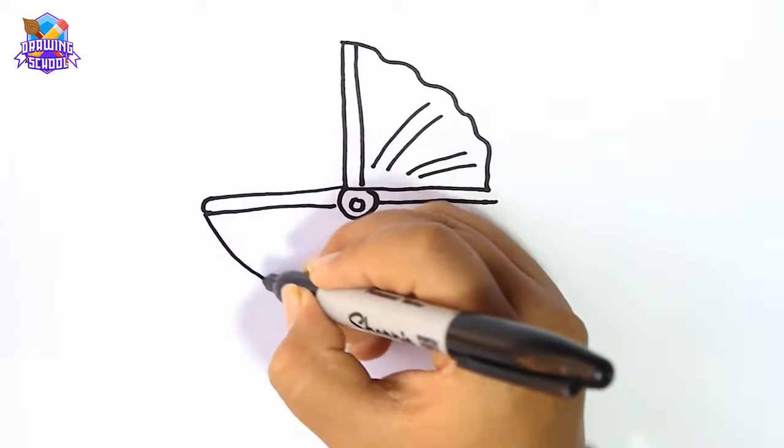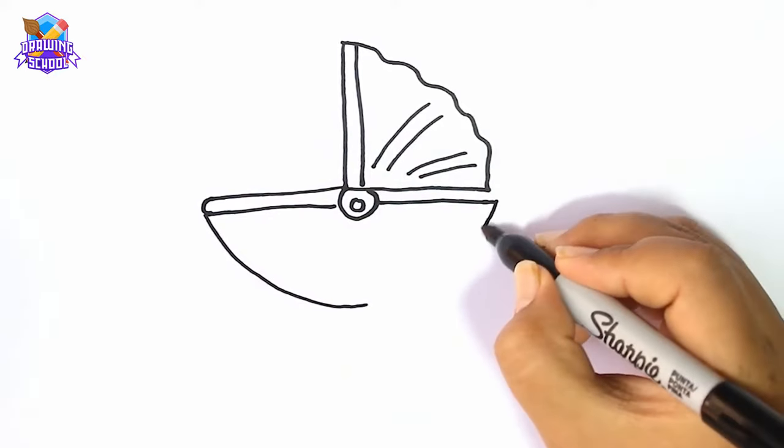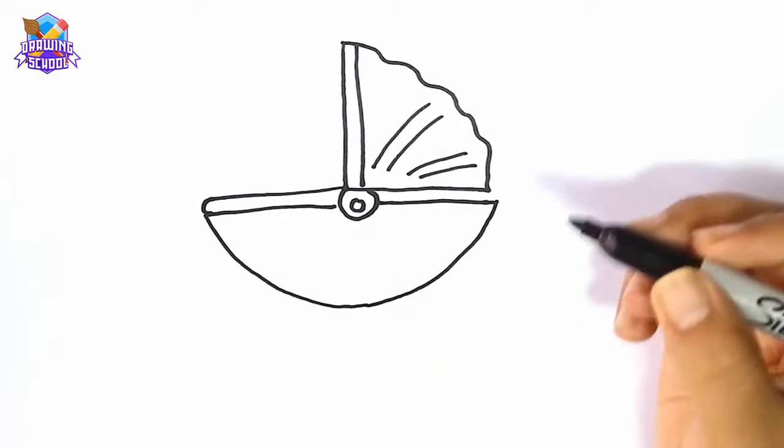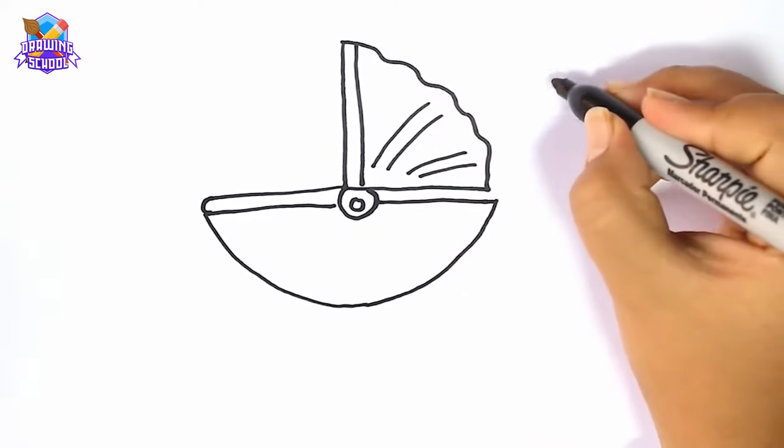And now we draw the bottom part with a big smile line. Once we have this done, we draw a curved line coming from here.